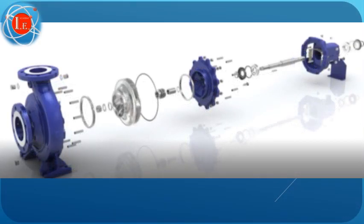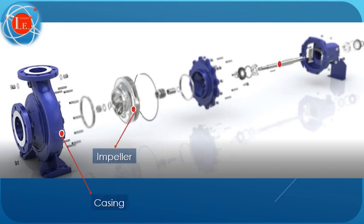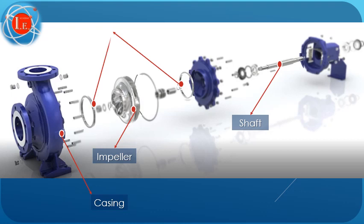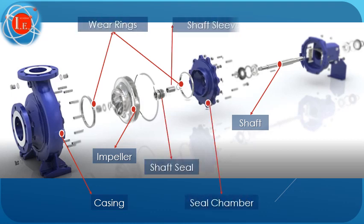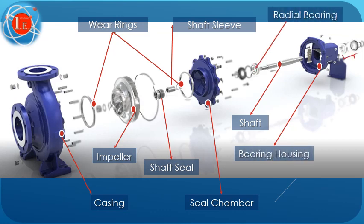These components are: pump casing including diffuser, impeller, shaft, wear rings, seal chamber, shaft seal, shaft sleeve, bearing housing, radial bearing, and thrust bearing. We will explain the function of each component on the next slides.